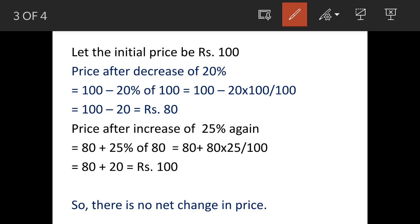We'll see the solution now. Assume that the initial price is Rs. 100. Now price is decreased by 20%, so that means 100 minus 20% of 100. 20% of 100 equals 100 into 20 divided by 100, which is equal to 20. So 100 minus 20 becomes Rs. 80. This is our decreased price.